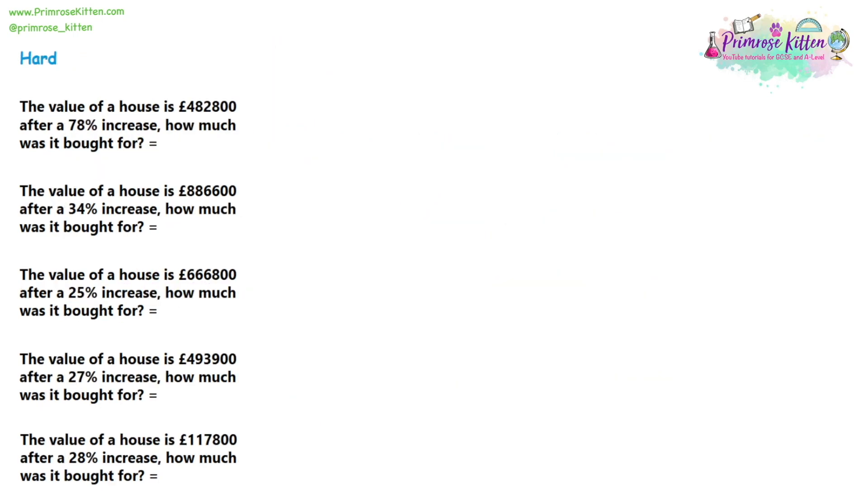Moving on to the hard questions, it's a very similar method. So the value of a house is £482,800, and that is after a 78% increase. Because with the median questions, mobile phones, when you buy one, they tend to decrease in value. But things like houses, they tend to go up in value over time. So firstly, we're going to write down the number. So 482,800, and working backwards, try and find the original value. So again, it's going to be a division. So the division or the multiplication, it's nothing to do with it being an increase or a decrease. If it is a reverse question, you're trying to find 100%, it'll be a division. As we can see here, medium questions, decreases, and we're dividing. And the hard question increases, and we're still dividing.